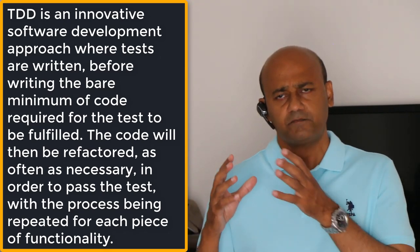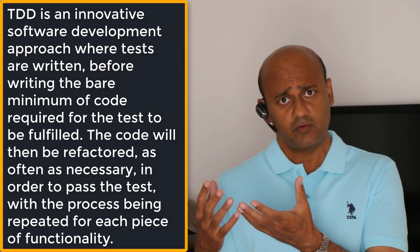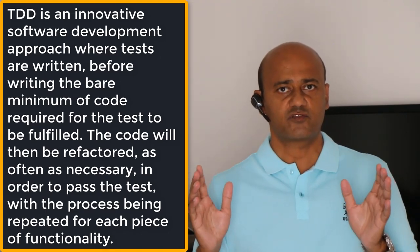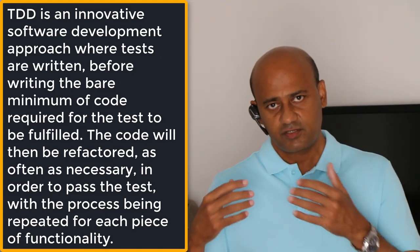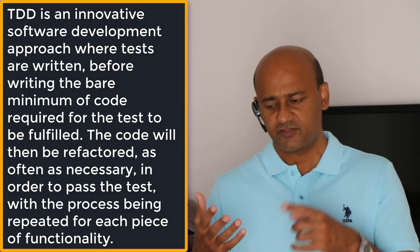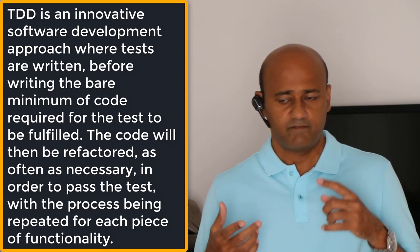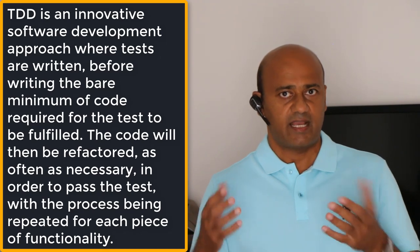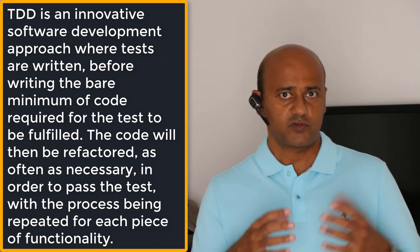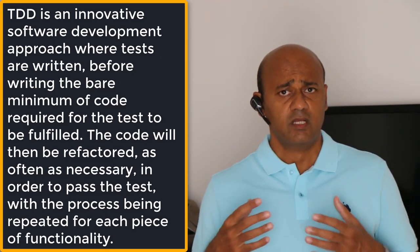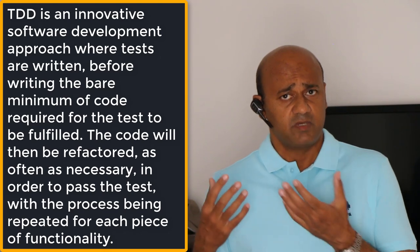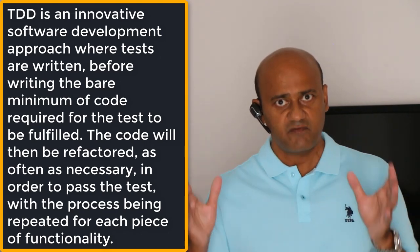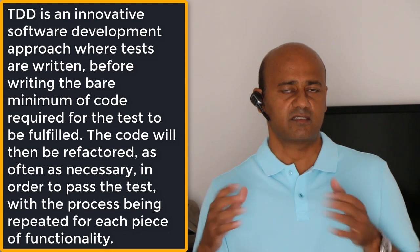Infrastructure as code means managing infrastructure — virtual machines, load balancers, connection topology — using a descriptive model with the same versioning DevOps teams use for source code. Just as the same source code generates the same binary, an IaC model generates the same environment every single time it is applied.